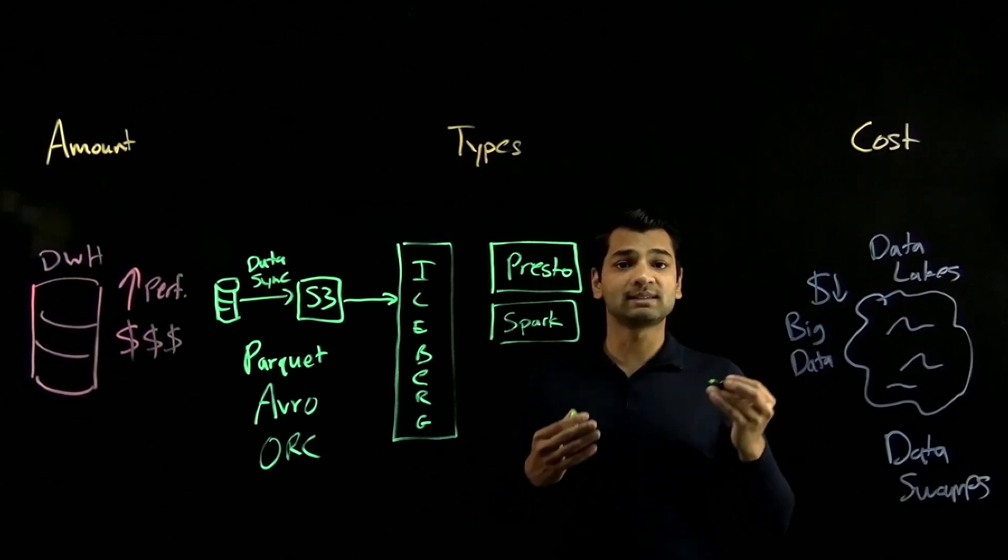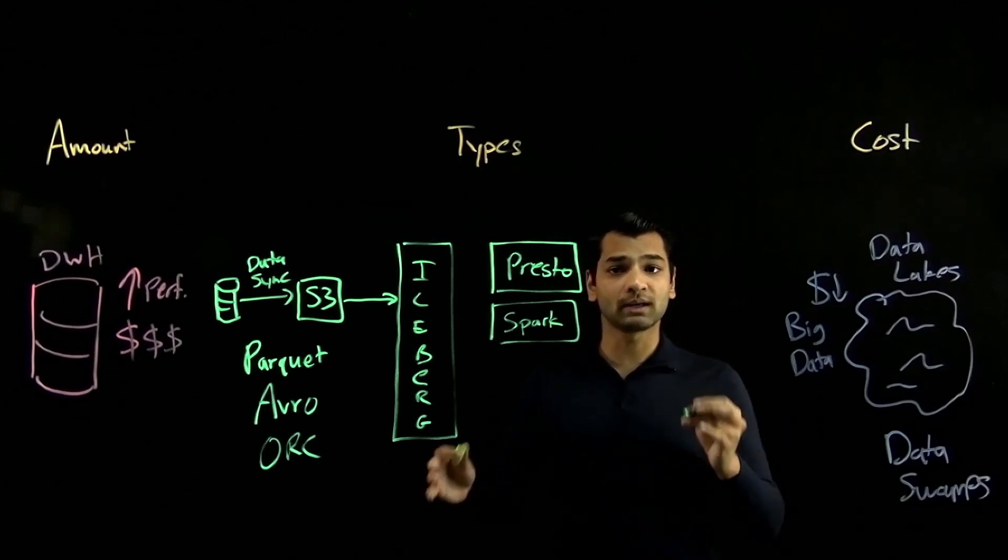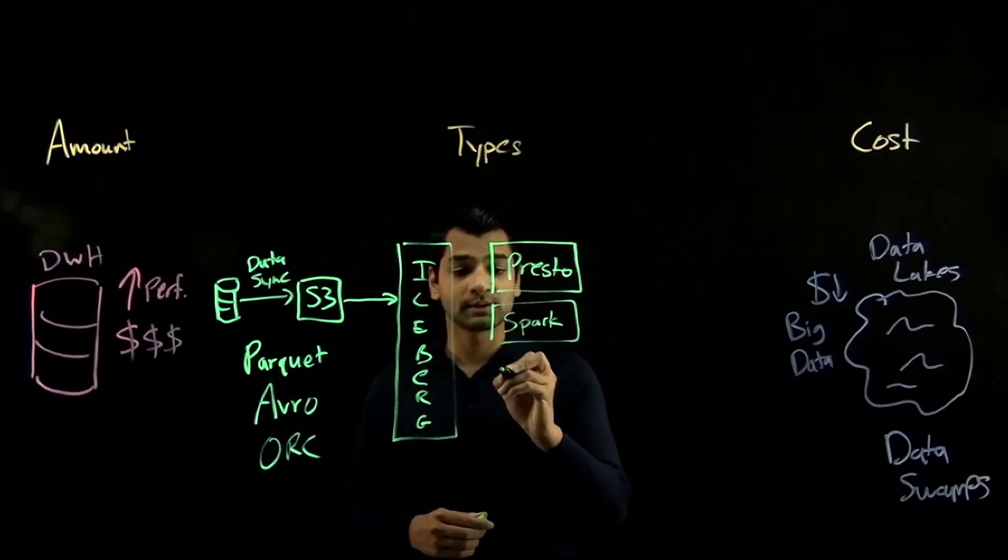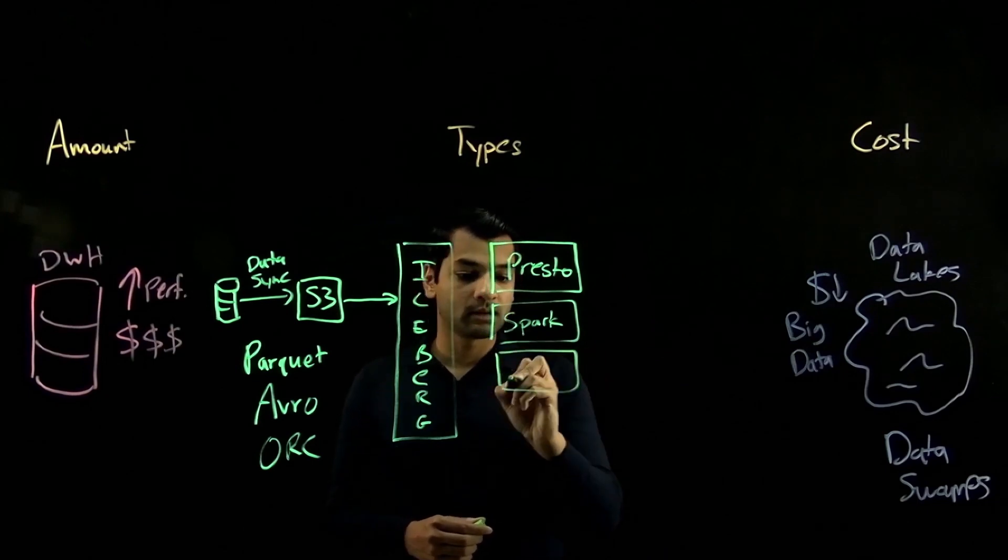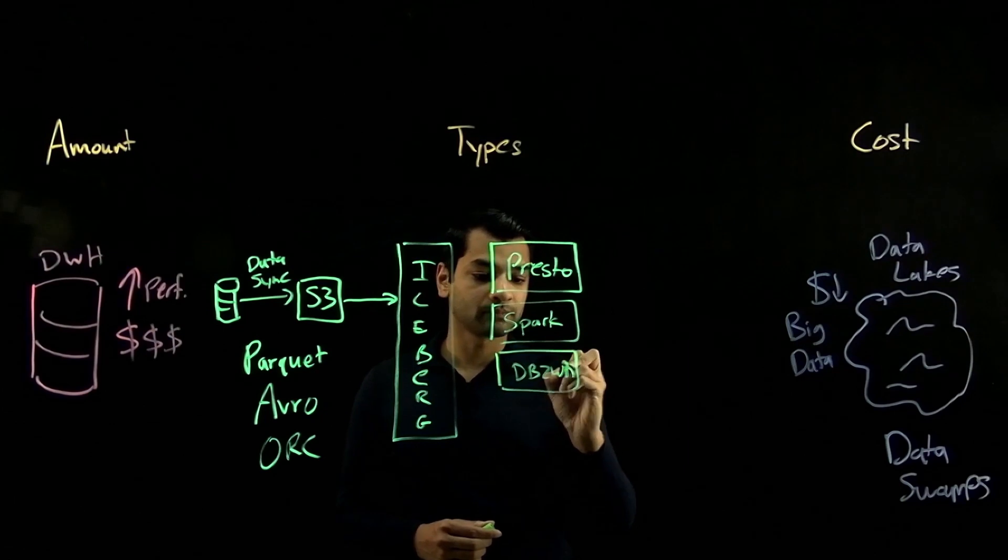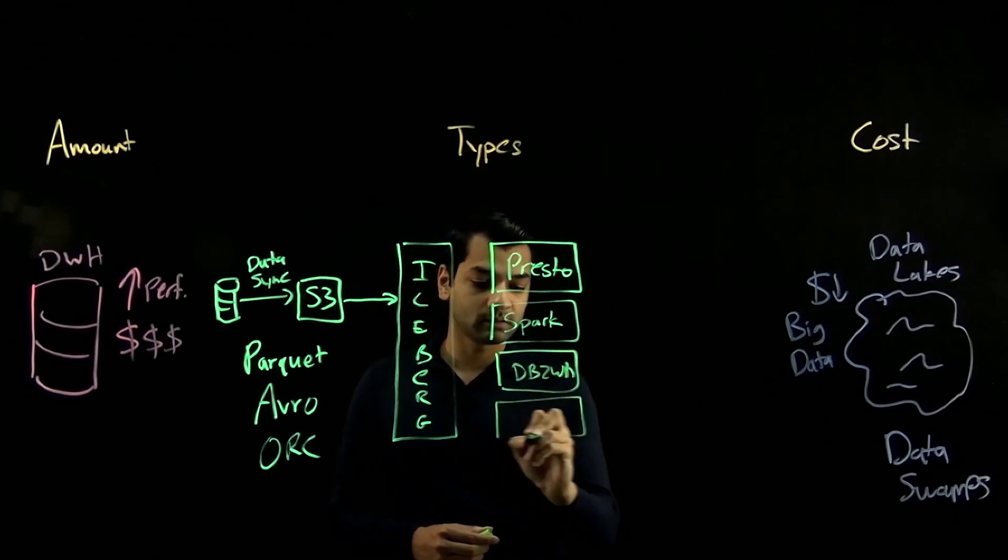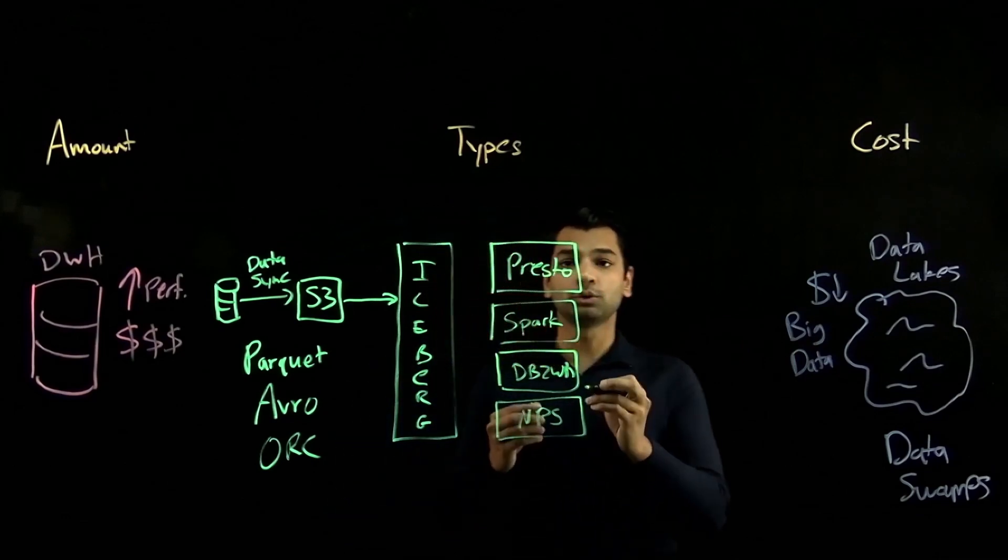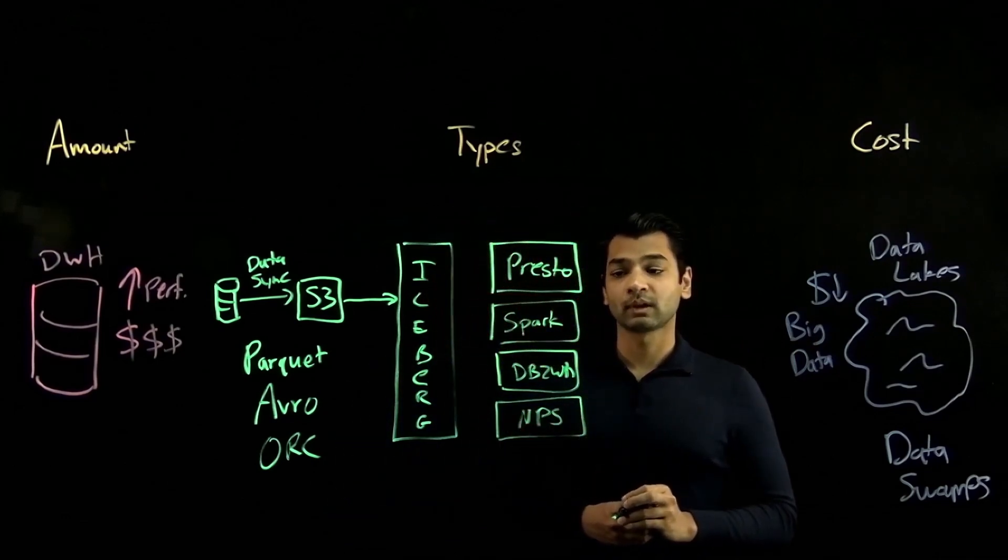You can also register existing data warehouse engines running inside your AWS environment, such as IBM DB2 Warehouse and IBM Netezza Performance Server to Watson X.Data.